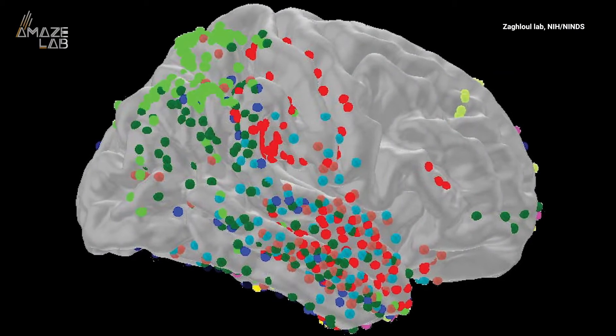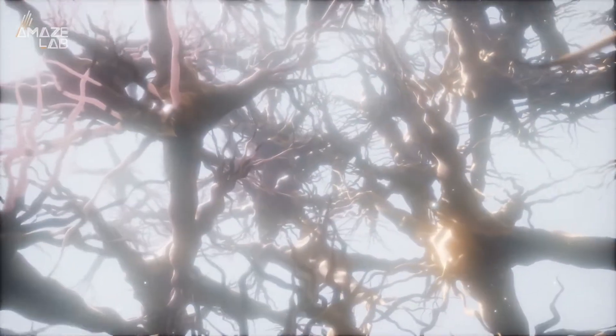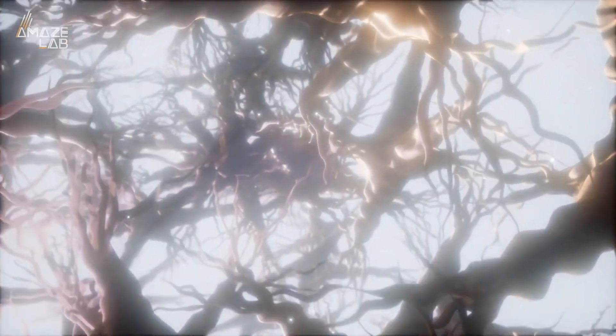researchers looked at epilepsy patients to test a theory called predictive coding. This is basically when the brain uses more neural activity to process new information than it does for things we are familiar with.